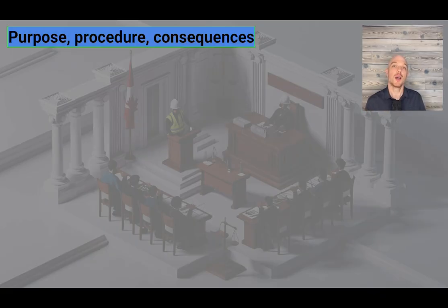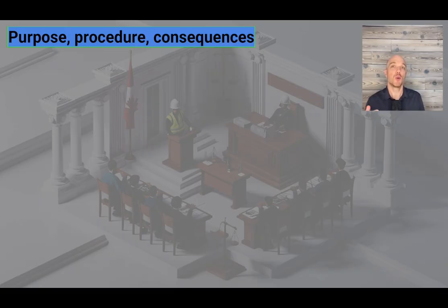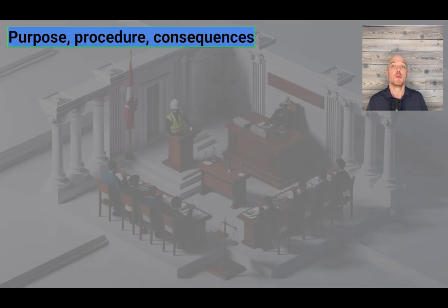If found guilty, the member may be fined, suspended, or have their license restricted or have conditions attached. A suspension may be for a specific time or until certain actions have been completed by the member, such as attending a university course or completing an ethics seminar. Limitations placed on a license may mean that the member works under the supervision of a professional or under periodic inspections.